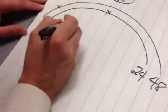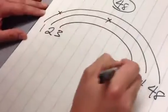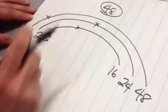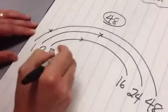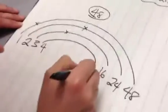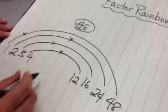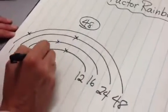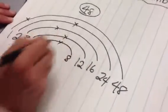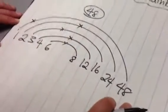So we know that 1 times 48 produces 48. We know that 2 times 24 produces 48. We know that 3 times 16 produces 48. We know that 4 times 12 produces 48. And we know that 6 times 8 produces 48. So these are the factors of 48.